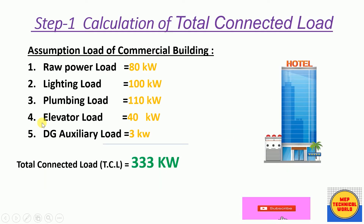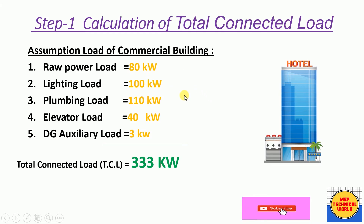In Step 1 we have to calculate the total connected load. Suppose we are calculating the total connected load of a hotel building — a commercial building. In this building: total raw power load is 80 kW, total lighting load is 100 kW (including ceiling lights, facade lights, landscape lights, and others), plumbing loads are 110 kW (including filter pumps, hydro-pneumatic pumps, etc.), elevator load is 40 kW, and DG auxiliary load is 30 kW. The total connected load (TCL) = 80 + 100 + 110 + 40 + 30 = 333 kW.